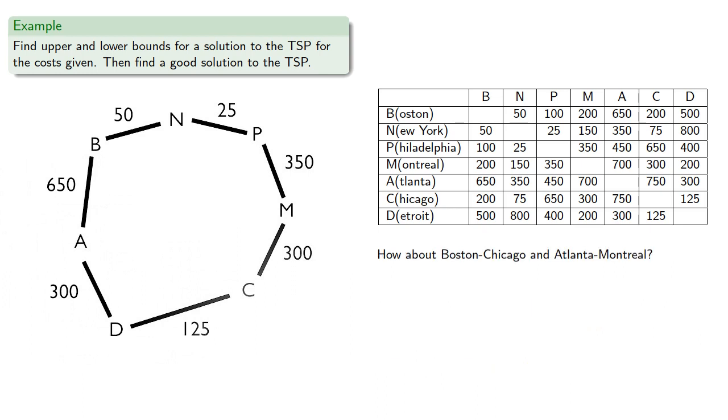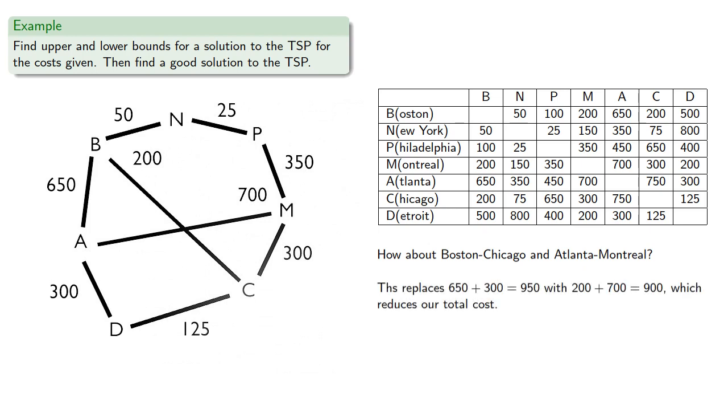How about Boston-Chicago and Atlanta-Montreal? This replaces a total cost 950 with a total cost 900, which reduces our total cost, so we'll replace and straighten.